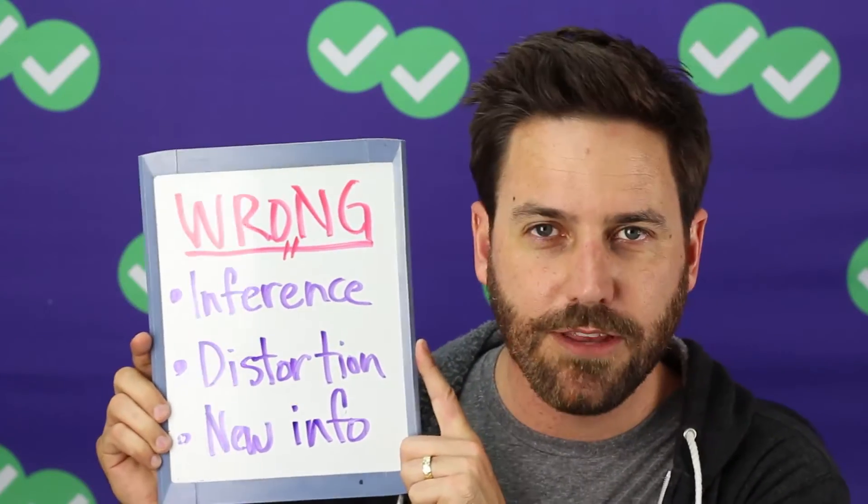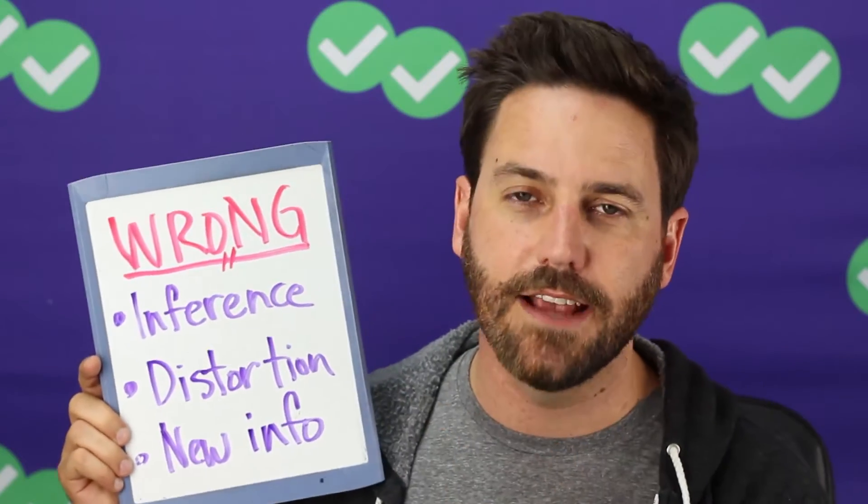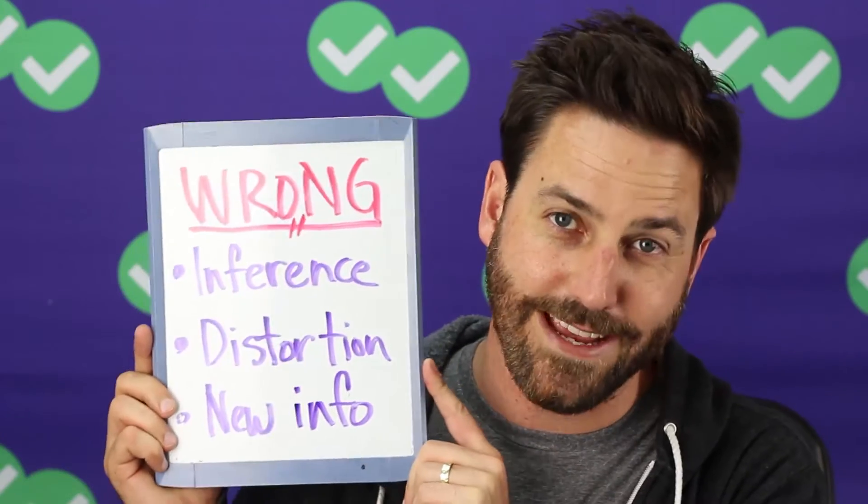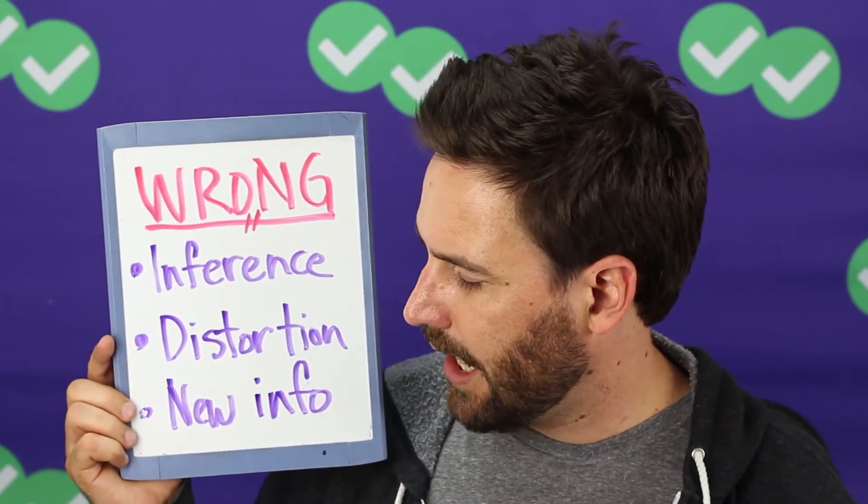We want to work on eliminating wrong answers first instead of just trying to find the right answer. It's easier to eliminate wrong answers because there are more of them, and it helps narrow in on what is right. Sometimes there's only one small thing in an answer choice that's wrong and you need to find that one small thing. If you can't find anything wrong with it, then you've found the right answer. Common wrong answers in detailed questions: one is an inference where the answer synthesizes information from two different places in the passage; another is distortion, where it takes information and twists it; and finally, any answer choice that adds new information — even on the same topic — is going to be wrong. There has to be something in the passage that supports the answer choice.